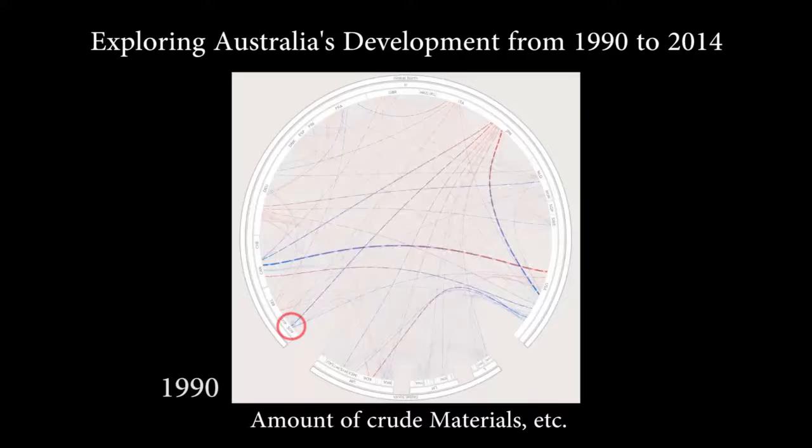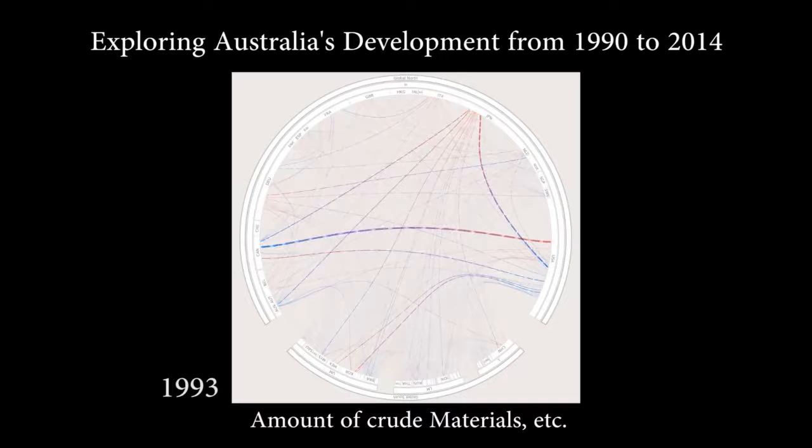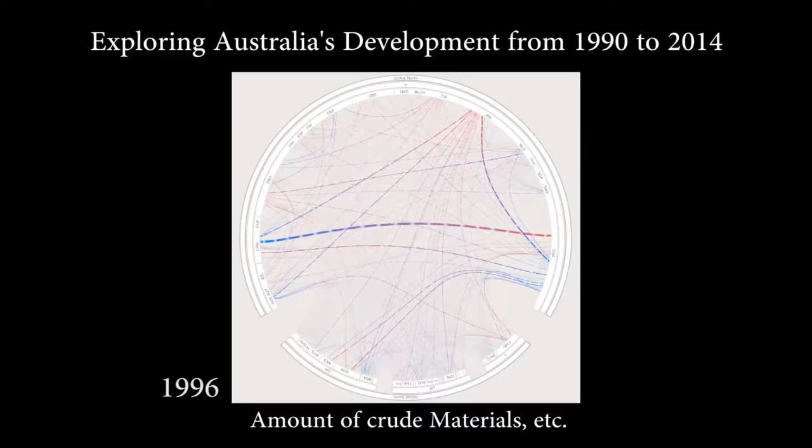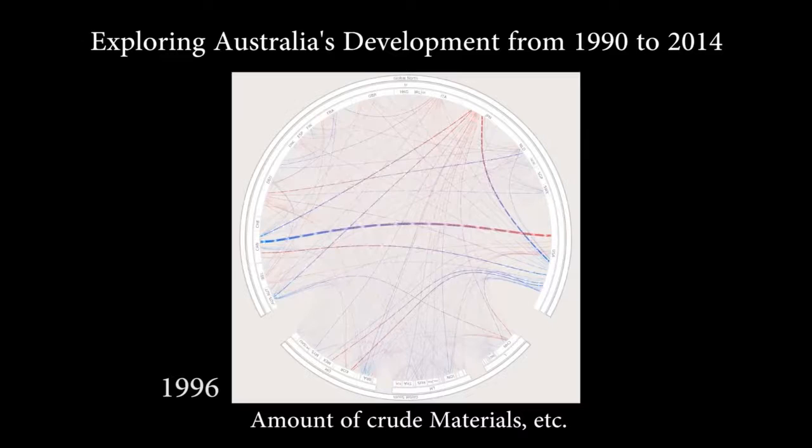Analyzing the import and export of crude materials, at first the user can see an overall growing market. Starting in 2002, the export of Australia drastically increases as well as the import of China.